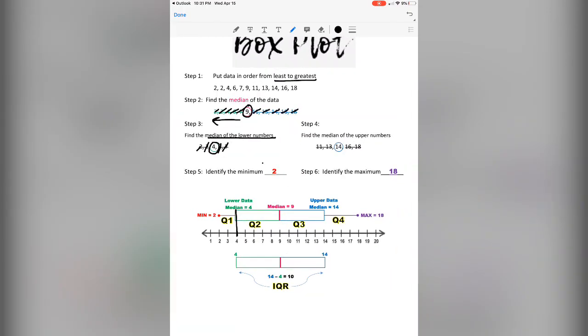Now we'll do the same with the upper numbers. We will find the median of the higher numbers. And those numbers will be found to the right of the number 9. So again, go through the process to find the number that's in the middle, 14. And this will be represented by the line, or the right side of the box, in the graph.